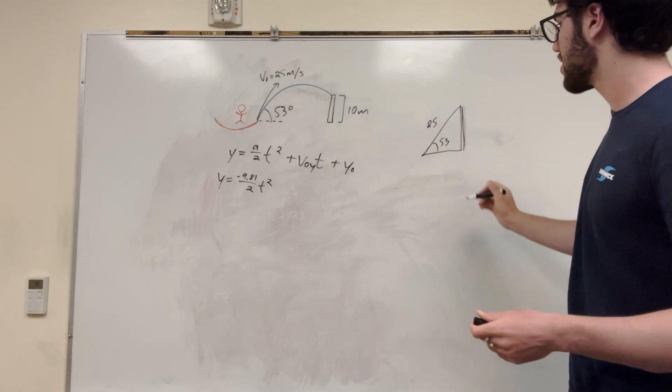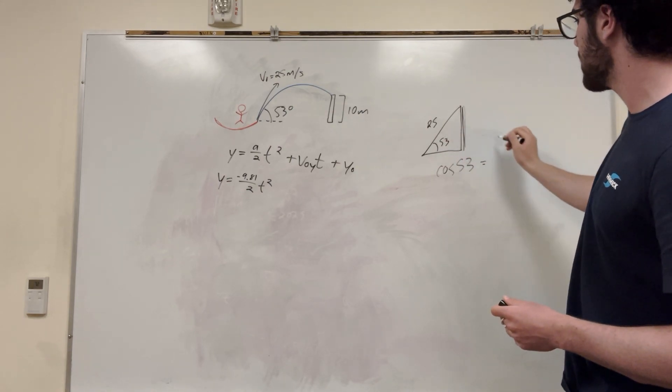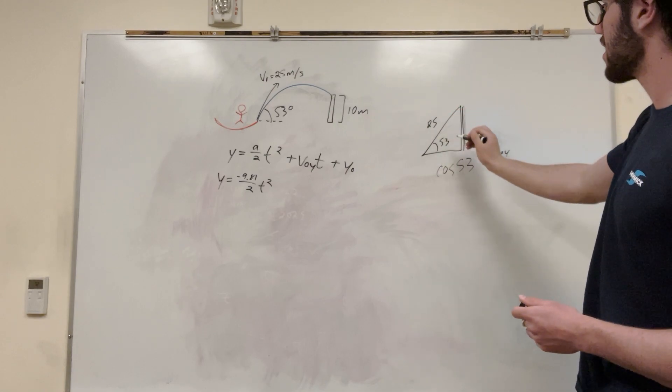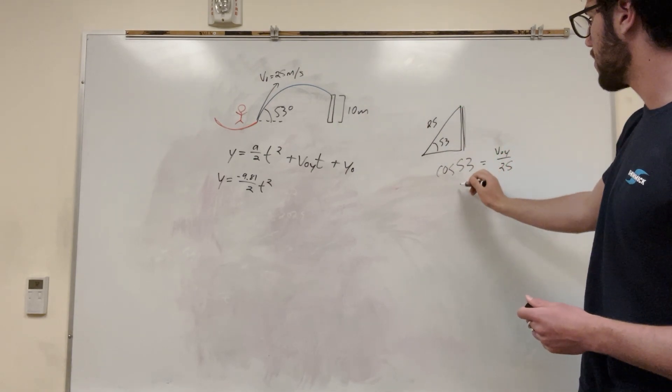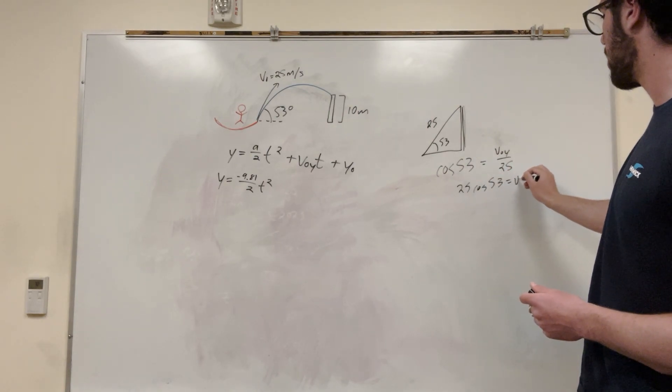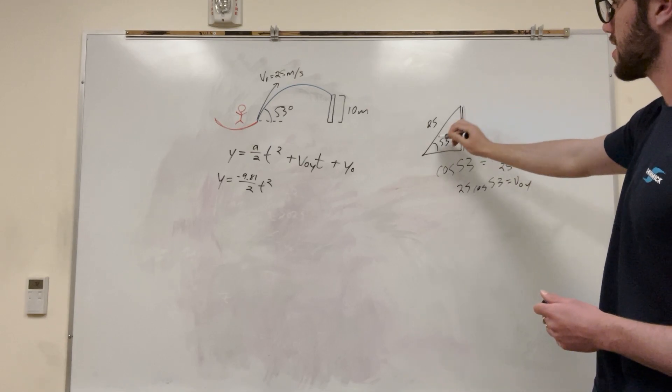So we know that, you know, Sarkatoa, cosine of this 53 is going to be equal to the opposite. So this is v-naught y, right, over the initial velocity, which is 25. So if we can move that 25 over, 25 cosine of 53 is equal to v-naught y, which is this line right here, basically. And then this is our initial velocity.